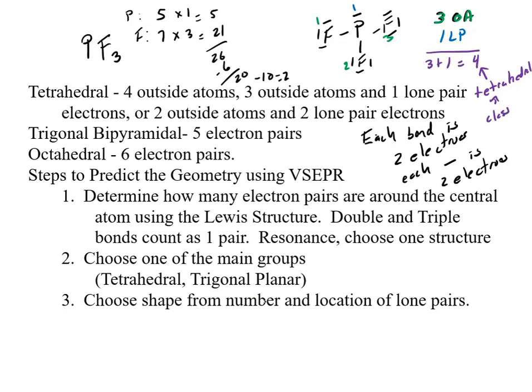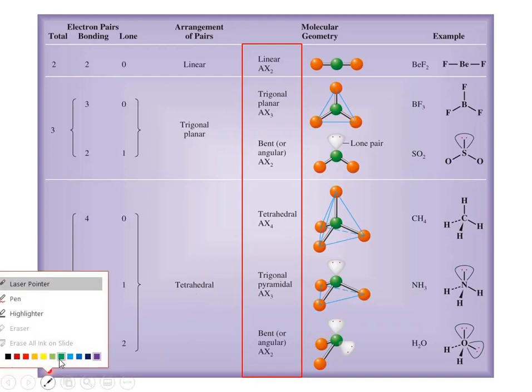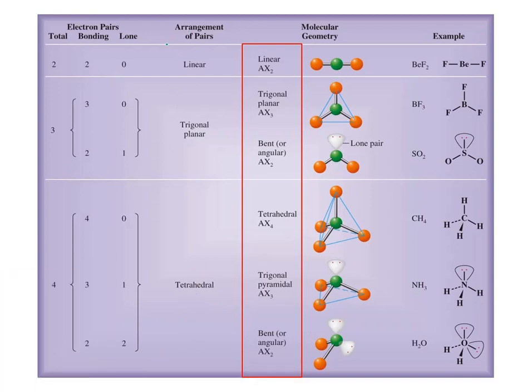And then choose the shape based on the number and location of the lone pairs. This is a good place to do memorization. So when I want the molecular geometry, what I'm looking for is this that is circled in red here. So the class, which is not what I'm looking for, class slash family, however you want to think about it, is this.